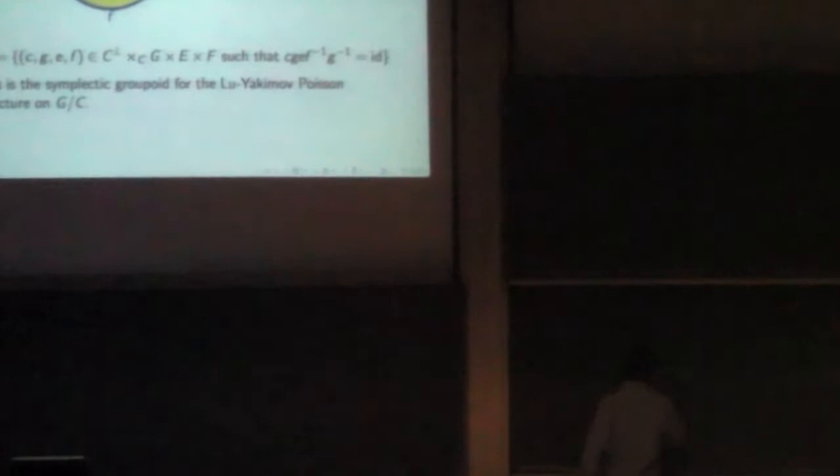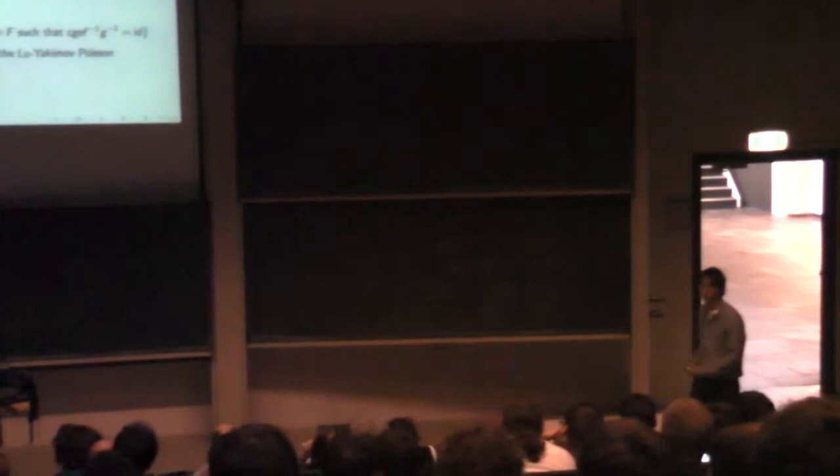How does the multiplication work? It looks sort of like cellular mitosis — you start with something like this and then divide it into two in the middle, and these two things separate into two cells. That's the picture that shows you the multiplication on the symplectic groupoid.